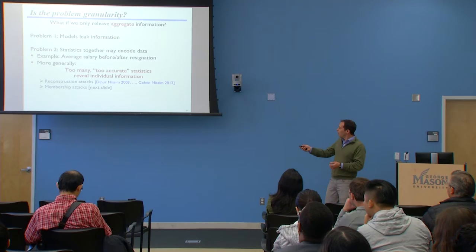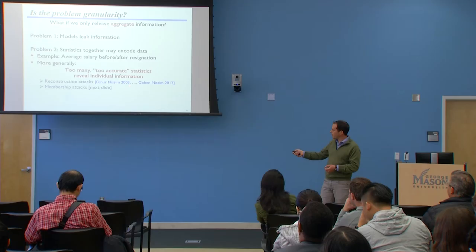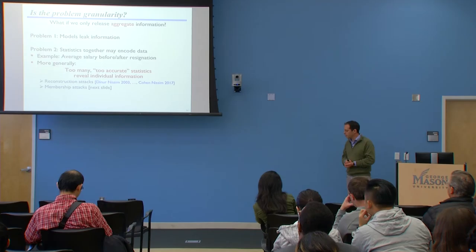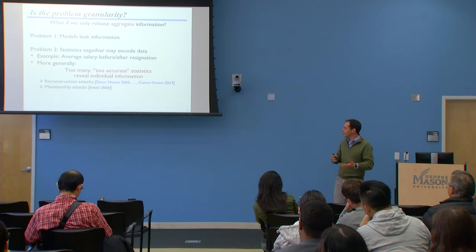More generally, there's a realization that if you have too many, too accurate statistics, then you end up revealing individual level information about data points. There are several lines of work showing that — reconstruction attacks and membership inference attacks. These were kicked off by a seminal paper by Dinur and Nissim, where they introduced this idea and showed it comes up in lots of surprising ways. The metamessage of this body of literature is that you cannot release everything everyone would ever want to know about your data without basically revealing the data itself.